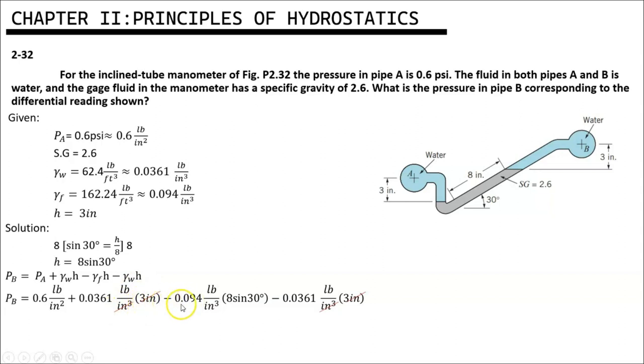minus 0.094 pounds per cubic inch times 8 sine 30° minus 0.0361 pounds per cubic inch times the height which is 3 inches. Cancel all the common dimensions.